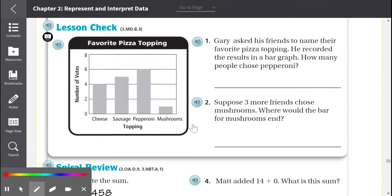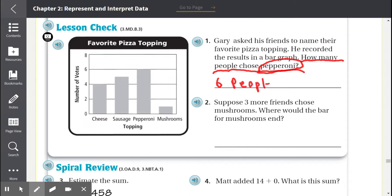Number 1, Gary asked his friends to name their favorite pizza topping. He recorded the results in a bar graph. How many people chose pepperoni? So we underline our question because it tells us what to do. How many people chose pepperoni? So pepperoni, we find it on the bar graph. Pepperoni stops at 6. So 6 people chose pepperoni.